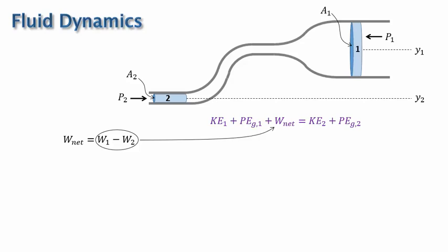The total or net work, then, is work one minus work two, and we can then put this into the equation and organize the variables so that all of the location one variables are on one side and all of the location two variables are on the other side of the equation. Further, we can recognize that each work term is force times distance, where distance is the distance over which the pressure differential is calculated, which is the width of each fluid segment here.